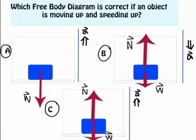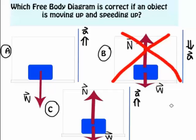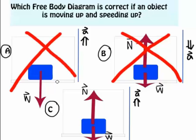If an object is moving up and speeding up, this means the net force and acceleration is upwards, so we know b can't be right. a is missing the normal force, so it's also incorrect. c is correct because we have acceleration upwards due to the normal force, which is causing the net force.